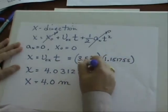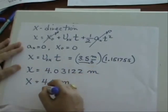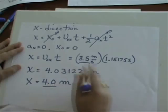But I know that I only want two significant figures because that's what I was given. Two significant figures. So I round it off to x equals 4.0 meters.